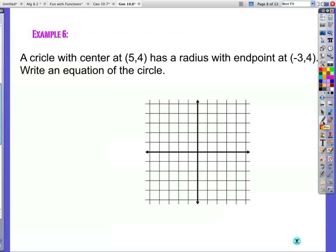Okay. A circle with center (5, 4) has a radius with an endpoint at (-3, 4). So I have (-3, 4). Good goodness. So this is my center. And the radius must be about this long. How many units is that? 1, 2, 3, 4, 5, 6, 7, 8.